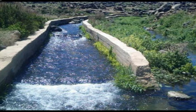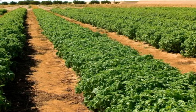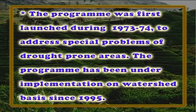Drainage lines for in-situ soil and moisture conservation, agro-forestry, pasture development, horticulture and alternate land use were its main components. The program was first launched during 1973-74 to address special problems of drought-prone areas and has been under implementation on a watershed basis since 1995. The allocation for the program is shared in the ratio of 75:25 between the center and the state.